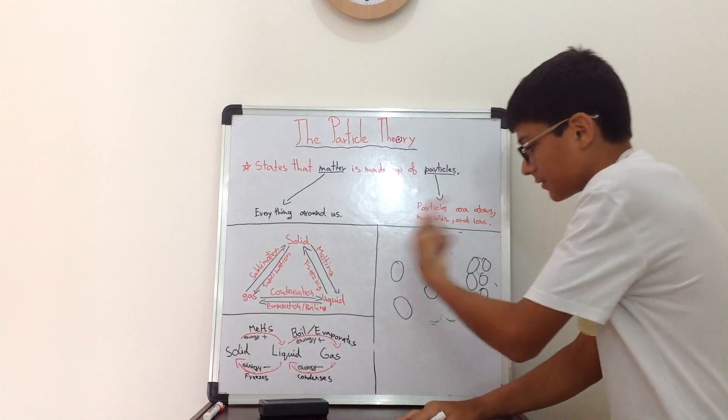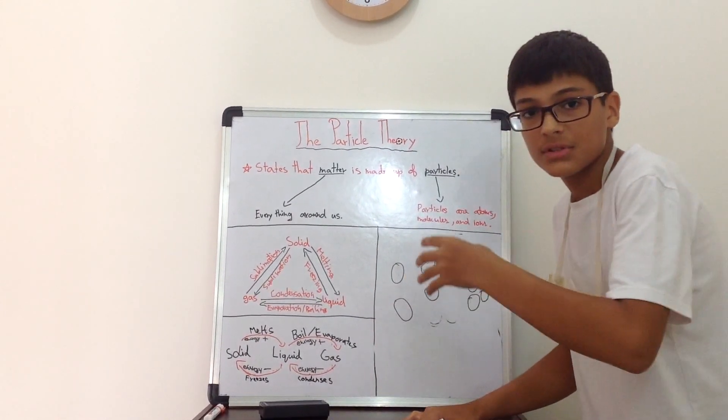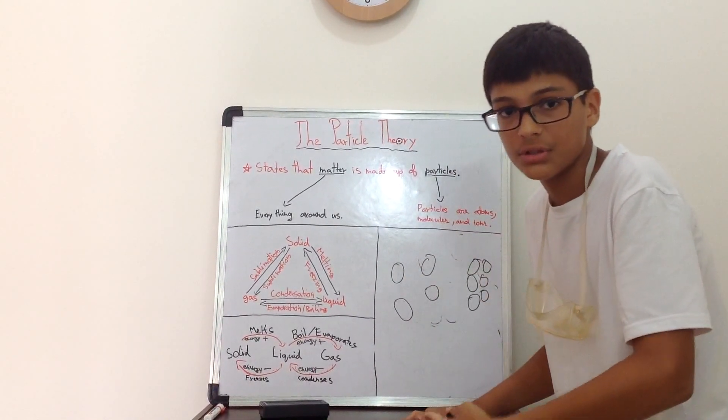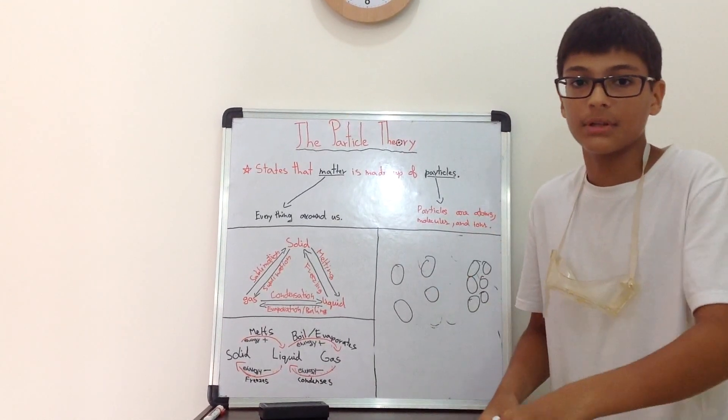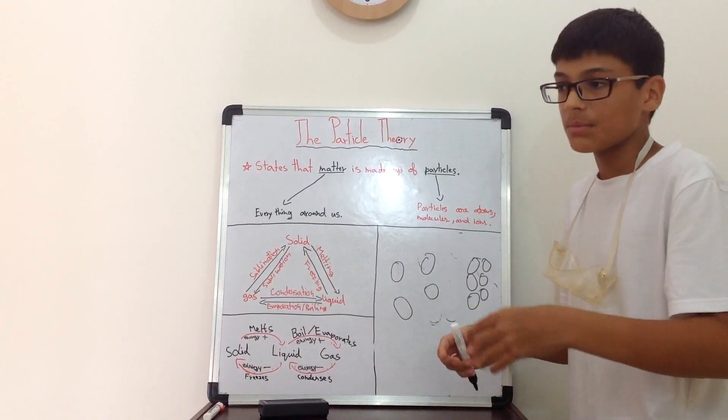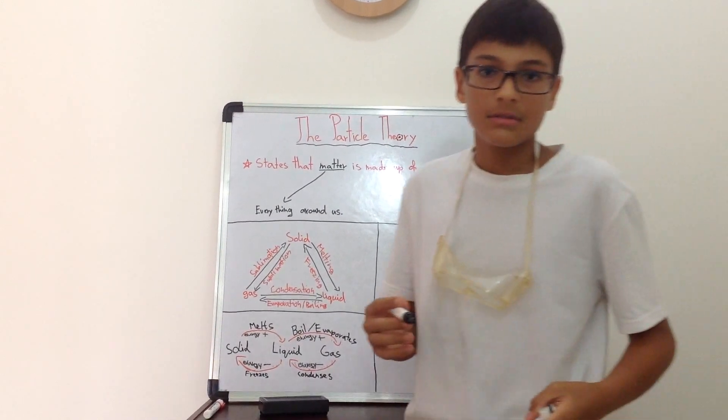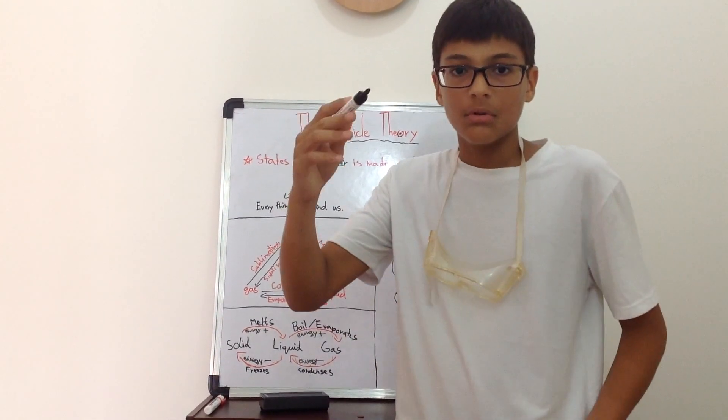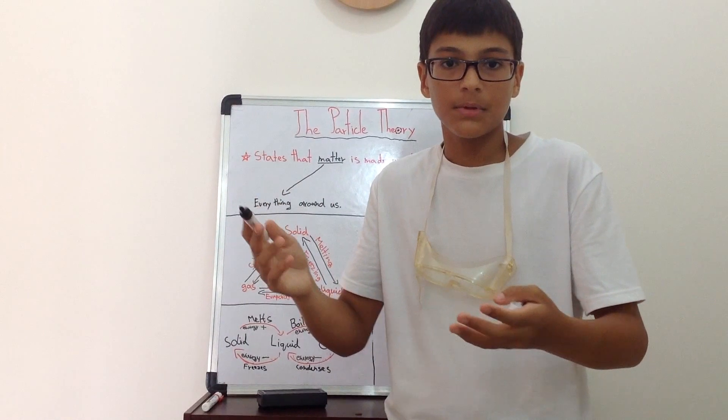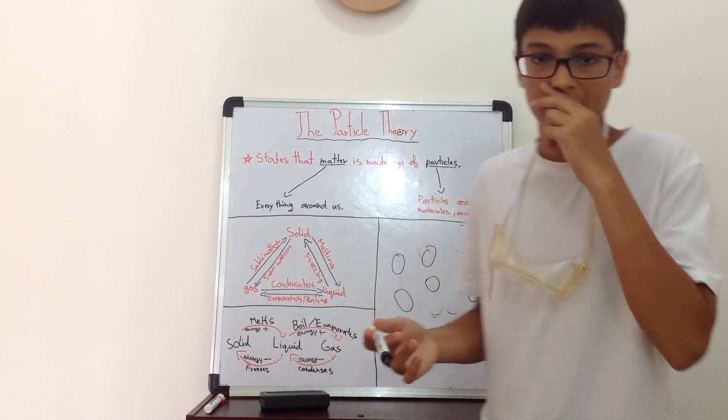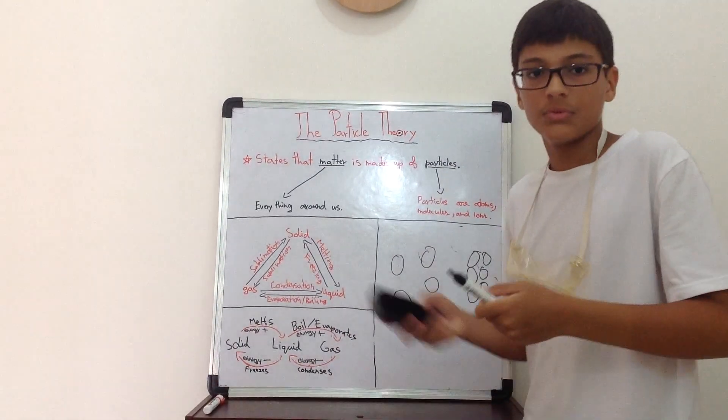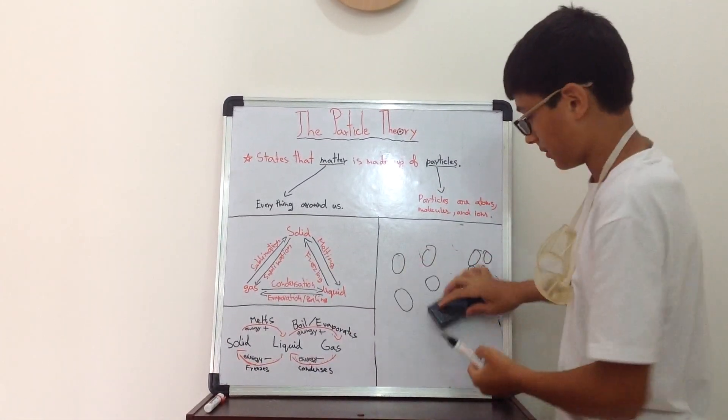But when a solid turns into a gas, it starts gaining so much energy so quickly that it turns into a gas immediately without forming a liquid. Examples of that could be dry ice turning into vapor and iodine. Those are two common examples that can go through sublimation.